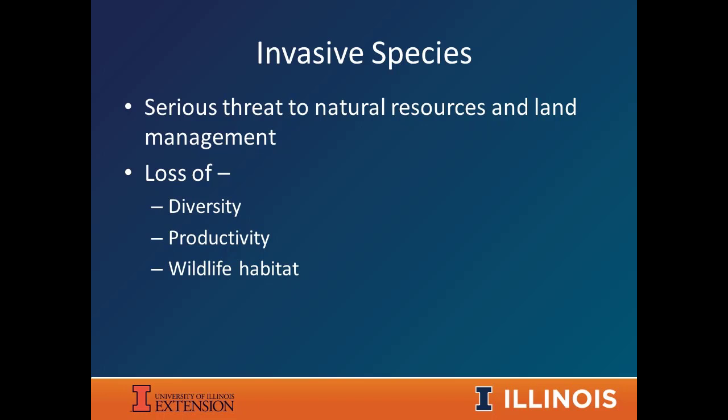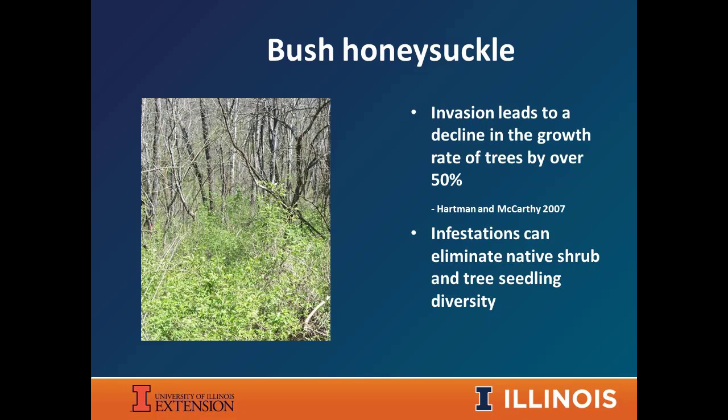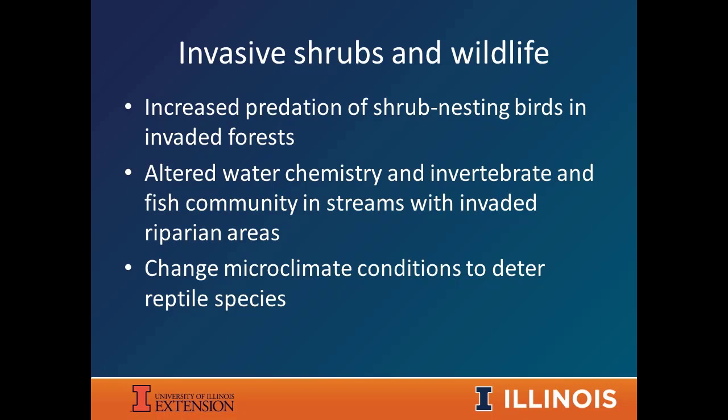Invasive species in general are serious threats to our management of forests and natural resources. When they invade, they lead to a loss of diversity, a loss of productivity, and a reduction in the quality of wildlife habitat. One good example is bush honeysuckle. Research shows that invasion of bush honeysuckle — an understory shrub — can lead to the decline of already established canopy overstory trees by up to 50%. And it's such a heavy shade caster that it basically eliminates native seedling establishment in the understory.